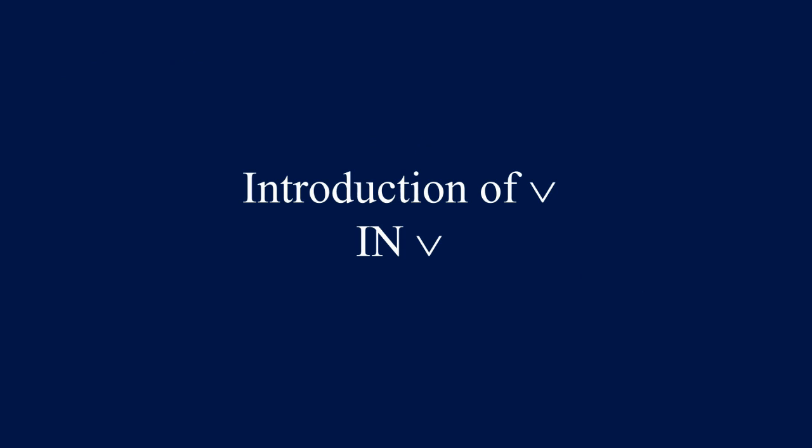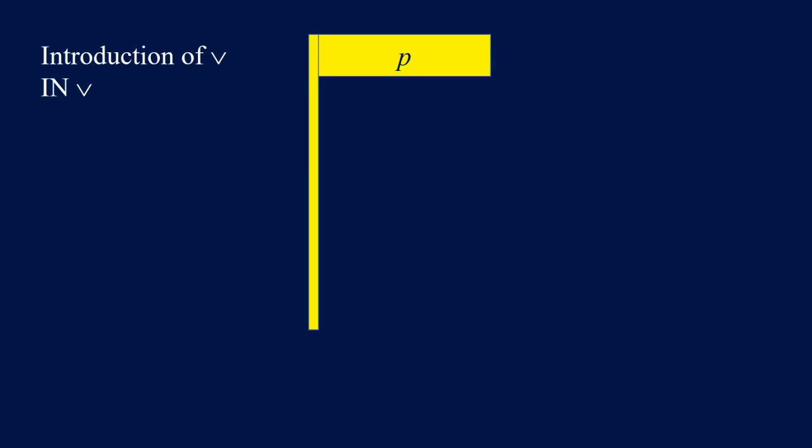Introduction of OR — we're going to use IN OR for reasoning. If we have P as premise in the flag or P under the flag, then we can conclude P or Q. Similarly, if we have Q, then we can conclude P or Q. This is also called the rule of disjunctive amplification.